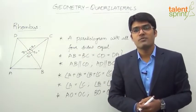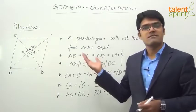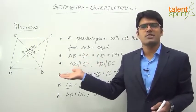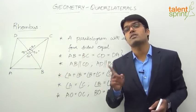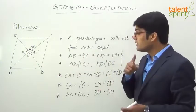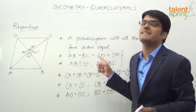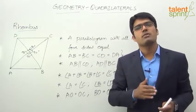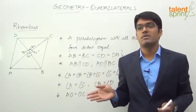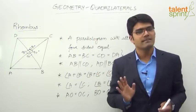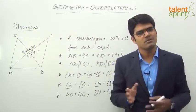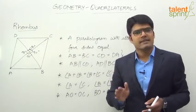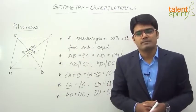The obvious point here is that all rhombuses are parallelograms — it is a special case of parallelograms. But not all parallelograms are rhombuses. Which parallelograms are rhombuses? Those parallelograms where all four sides are equal become a rhombus. So all rhombuses are parallelograms, but the converse is not true. All parallelograms are not rhombuses. Rhombus and rectangle are special cases of parallelograms.